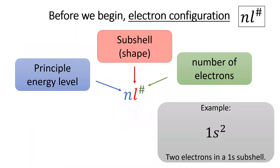But before we begin, you need to know how to write electron configurations. An electron configuration indicates how many electrons are in each subshell. In blue, we have the energy level. Then we have the subshell shape, either S, P,